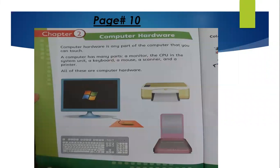Now look at page number 10 of your book. Before I start reading, write the date on the top of the page — today is 30th June. Computer hardware is any part of the computer that you can touch. A computer has many parts: a monitor, the CPU in the system unit, a keyboard, a mouse, a scanner, and a printer. All of these parts are computer hardware.